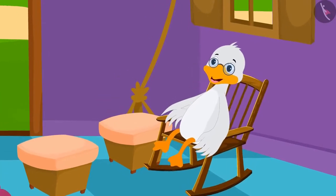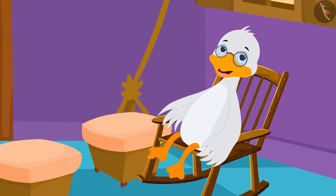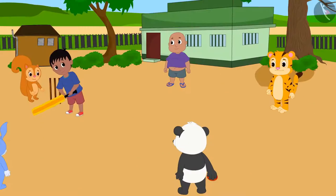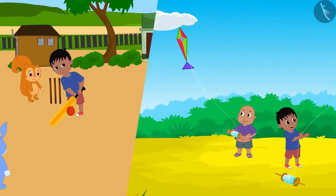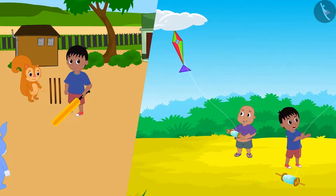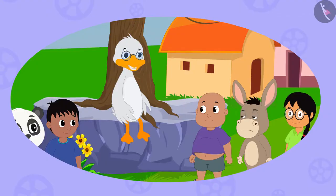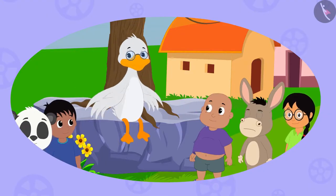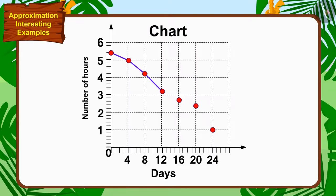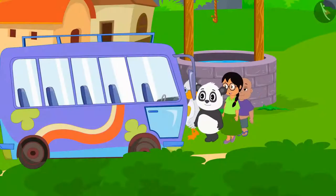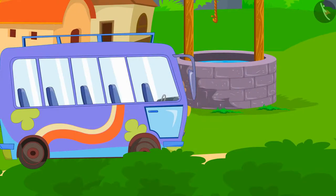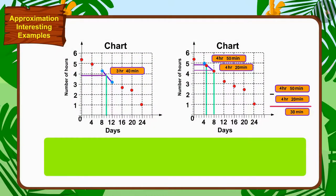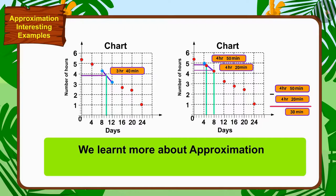Uncle is very happy that the children have now spent much less time on the phone and have started spending more time in other sports and studies. As promised to the children, uncle took the children on a trip seeing that the time spent on the phone has reduced. Children, in this video, we learnt more about approximation by some interesting examples.